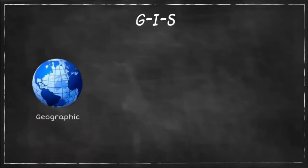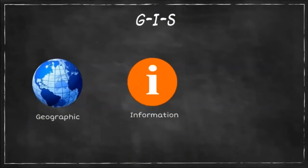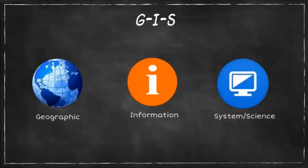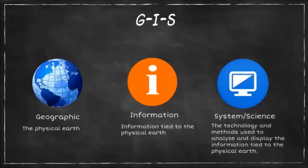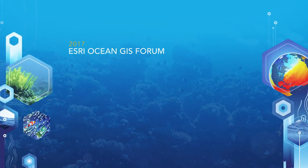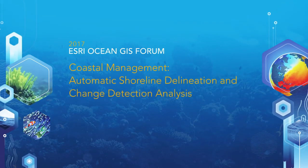In order to mitigate and control these threats, monitoring programs through GIS are used. There are many types of monitoring processes involving GIS. One example of GIS in coastal environment monitoring is shoreline delineation and change detection analysis.